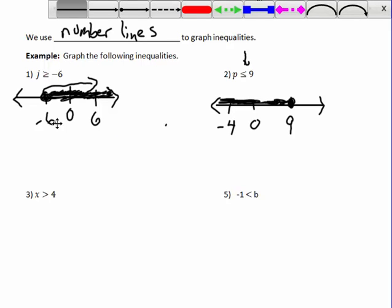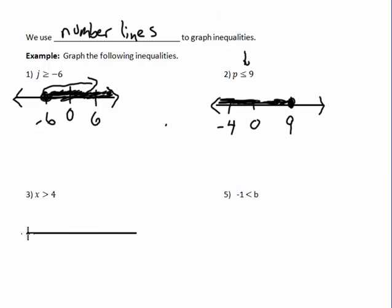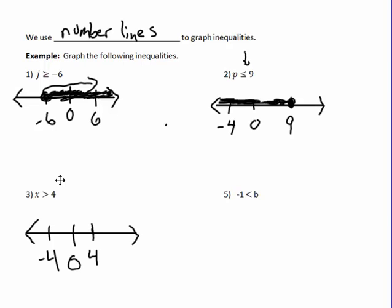Next: x is greater than 4. I get out the number line and mark 0, 4, and negative 4. Since it's strictly greater than — not greater than or equal to — I put an open circle at 4. Then I shade to the right for all numbers bigger than 4.